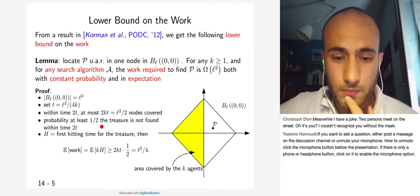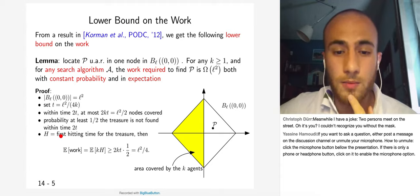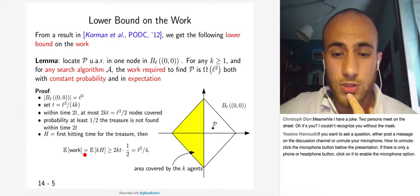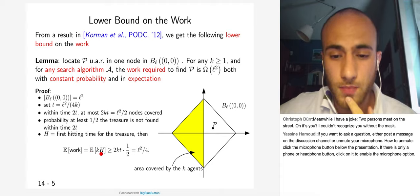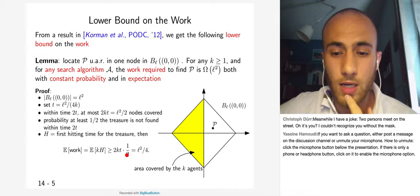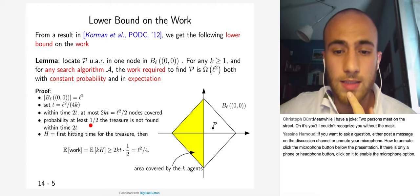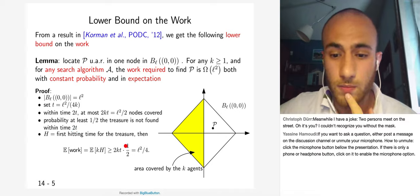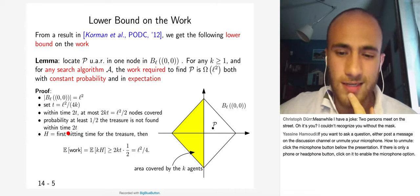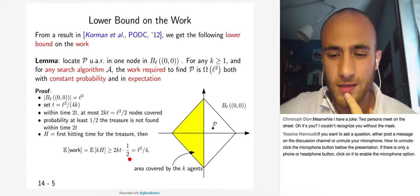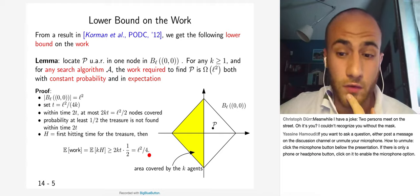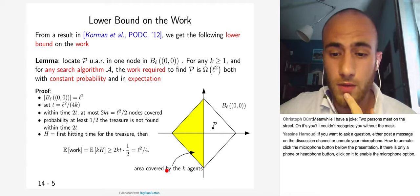For the second claim: letting H be the random variable denoting the first hitting time for the treasure, the expectation of the work is K times E[H], which is at least 2KT times 1/2, since H is at least 2T with probability at least 1/2. So this expectation is at least L^2/4, proving the lower bound holds in expectation as well.